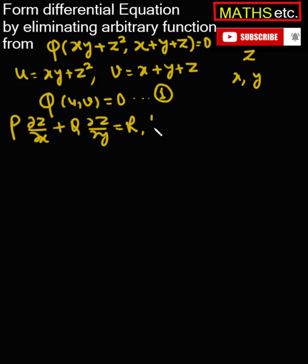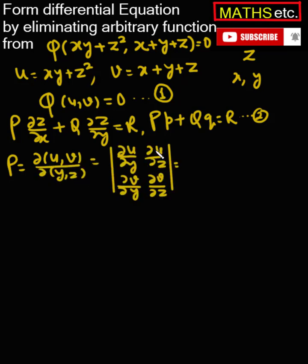which is more popularly known as pp plus qq equals r, where p is the Jacobian of uv with respect to yz. The values of these partial derivatives are obtained by using the relations of u and v, and the value of this determinant is x minus 2z.